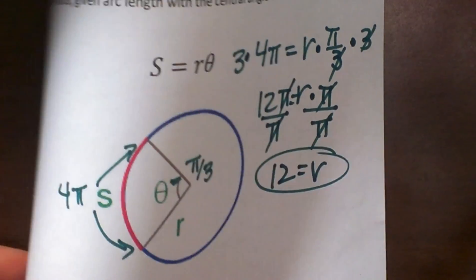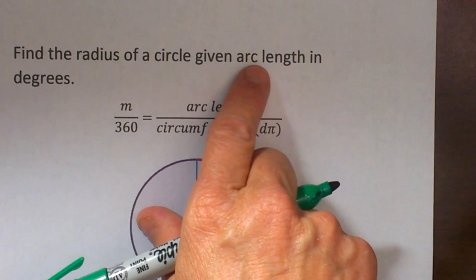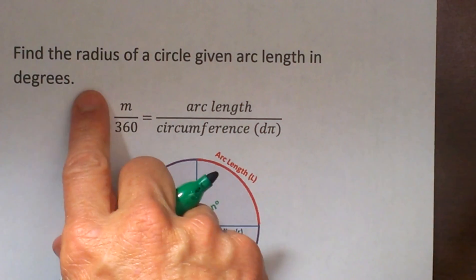Now let's look at the same type of problem but this time we are going to look at it in terms of degrees. Find the radius of a circle given an arc length in degrees this time.